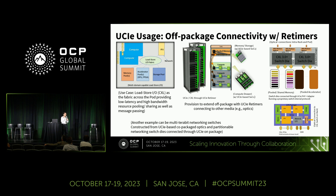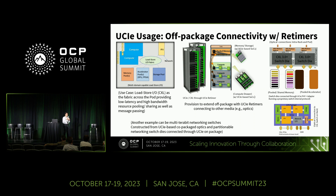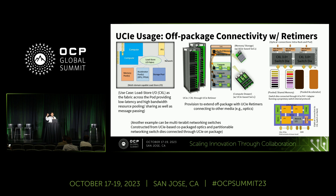Another interesting feature from UCIE 1.0 is the UCI retimer, whose primary usage model is co-packaged optics. We defined how the electrical side should work and defined all the pause points where the optical side — whatever technology is chosen — can signal it's not quite ready. With this, a package with co-packaged optics can connect to other components like switches at the rack or pod level. You can then access memory sitting in a different rack when you need more memory capacity, by running CXL through the UCIE. That's the vision.